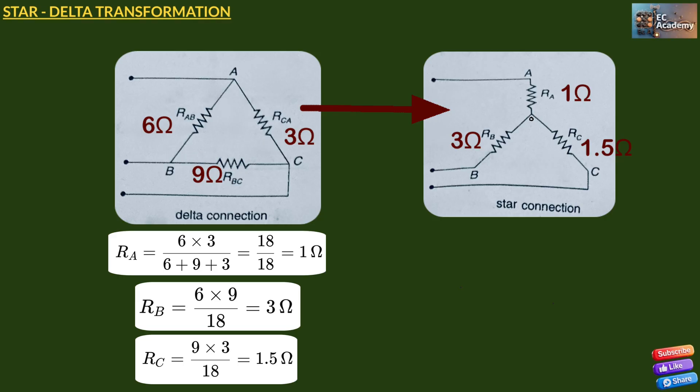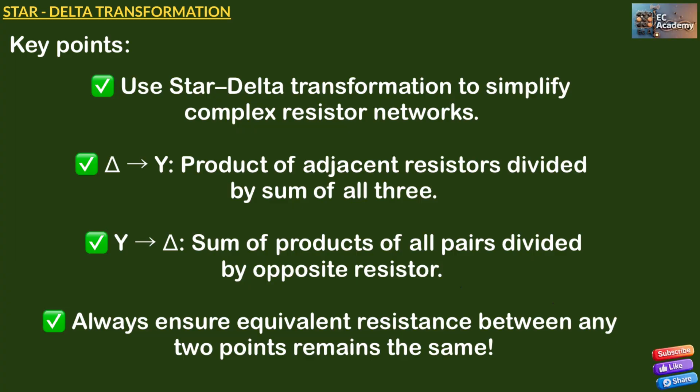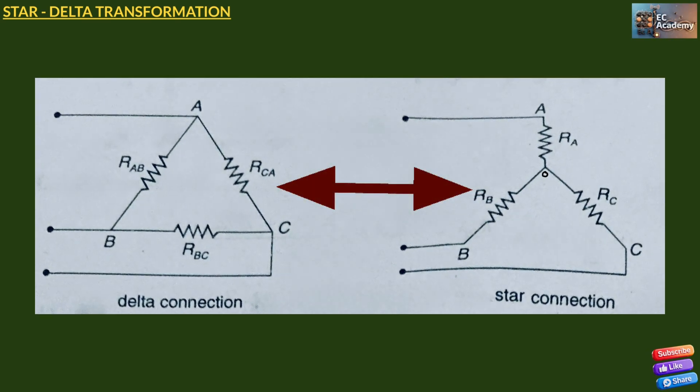It is very simple — we have just converted a delta network into a star equivalent network. Key points to remember: use star-delta transformation to simplify complex resistor networks. In delta-to-star conversion, use the product of adjacent resistors divided by the sum of all three. In star-to-delta conversion, take the sum of products of all pairs divided by the opposite resistor. Always ensure the equivalent resistance between any two points remains the same. This is how star-delta transformation turns a complex circuit into a simple one.